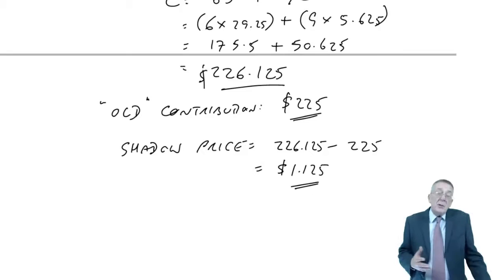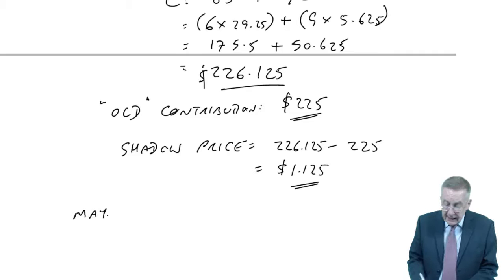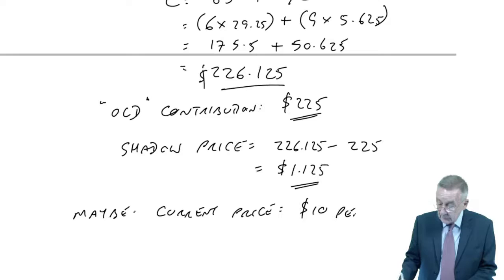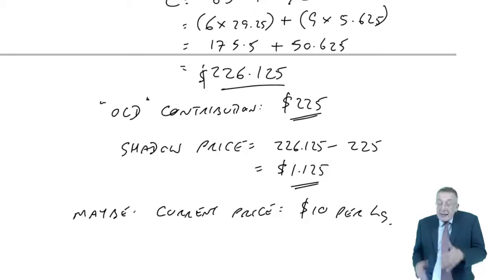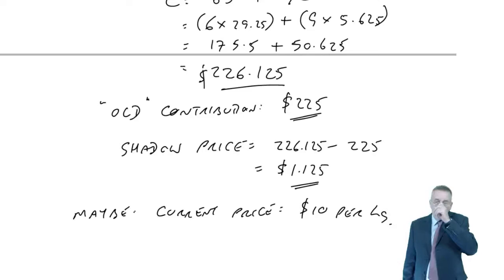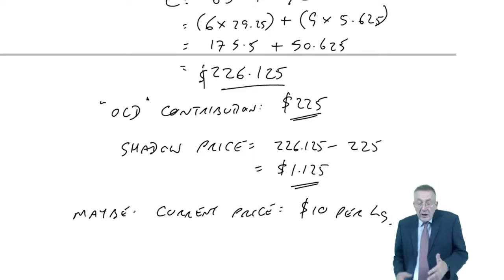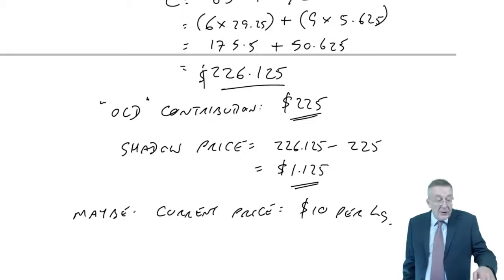That is the extra contribution we would earn. But how was the contribution originally calculated? When they were calculated, they'd have taken the selling price less the costs, including the cost of materials at the current price. Maybe the current price of materials is £10 a kilo. In working out the contribution, we'd have used $10 a kilo.